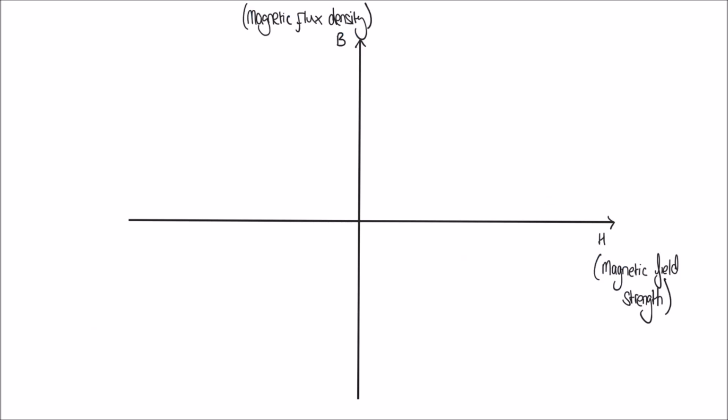The graph that I want to draw is what's called a BH graph. The x-axis you can see here is marked as H, and H represents the magnetic field strength. The y-axis, the vertical axis, is marked as B, which represents magnetic flux density.